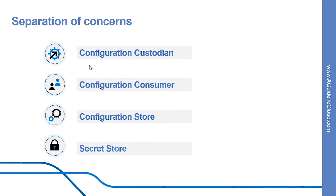So let's look at these new concepts. The first one is configuration custodian. Configuration custodian is responsible for generating and maintaining the lifecycle of the configuration values. These include CRUD on keys, ensuring the security of secrets, regeneration of keys and tokens, and defining configuration settings such as log levels for each environment. This role can be owned by operations engineers and security engineers while injecting configuration files through proper DevOps process and CI/CD implementation.